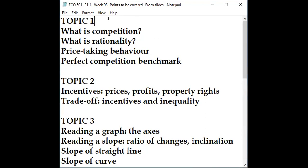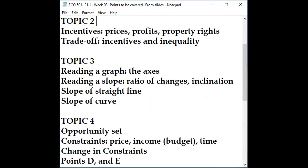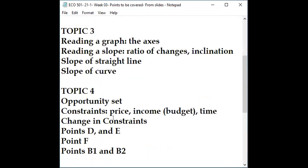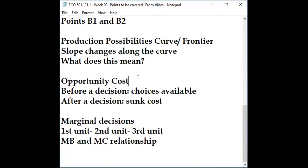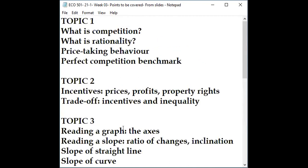If you've gone through the video lecture, today's discussion is divided into four parts. Topic one covers competition and rationality. Topic two covers incentives. Topic three is high school math — how to read a graph, etc. Topic four applies those concepts to economics, including opportunity cost and marginal decisions.